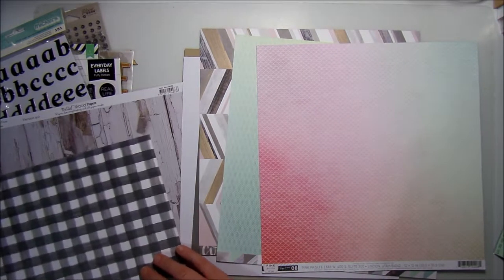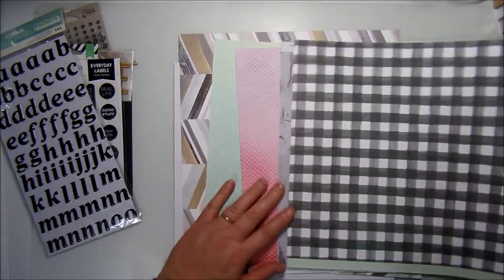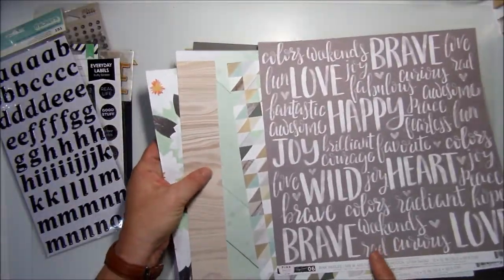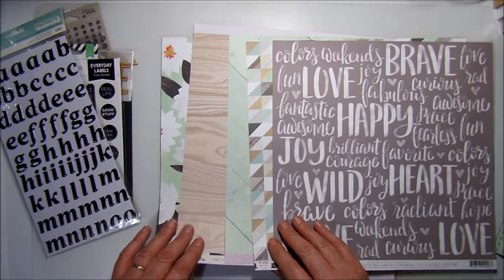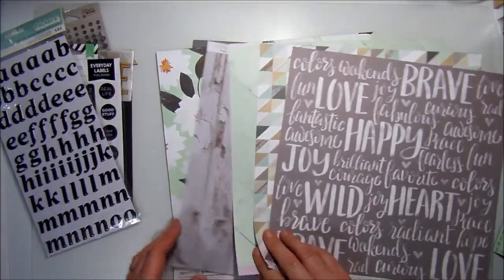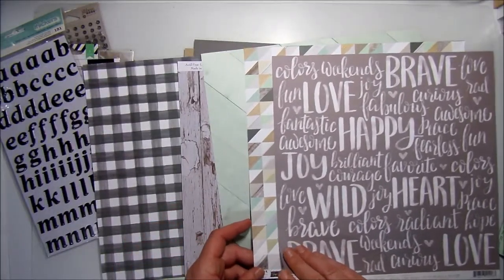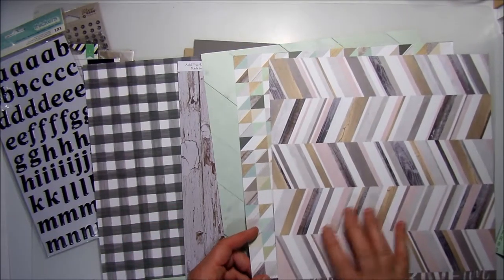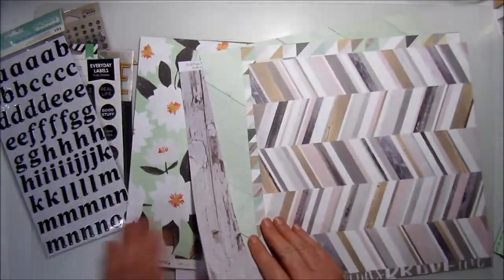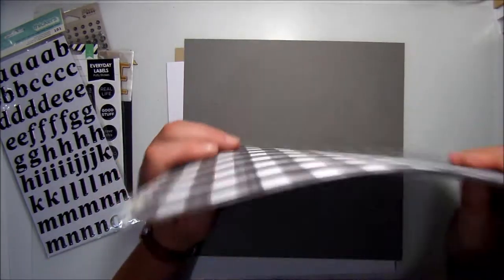These pattern papers go together no matter which side, so it doesn't matter which side you use, they all really go really well together. Bri's done a great job putting this kit together. So those pattern papers are lovely, there are six sheets of pattern paper in it.